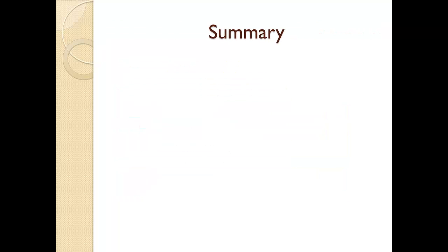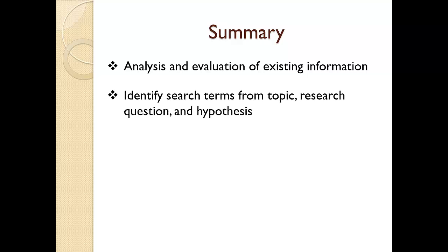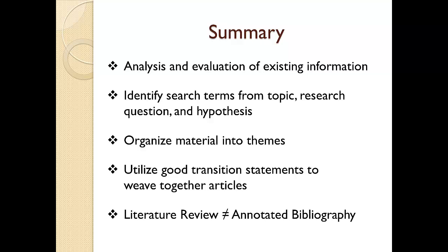Let's conclude by reviewing what I covered in this lesson. A literature review is an analysis and evaluation of existing information on the research topic. Begin your literature search by identifying terms from your research topic, research question, and hypothesis. Once you have located your material, organize it into theme groups. When writing the literature review, utilize good transition statements to weave your articles together. And finally, a literature review and annotated bibliography are not the same. Thank you for taking the time to listen to this lesson. I hope you now have a better understanding of how to create a good literature review.